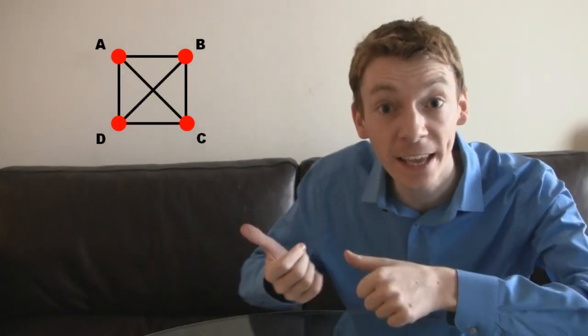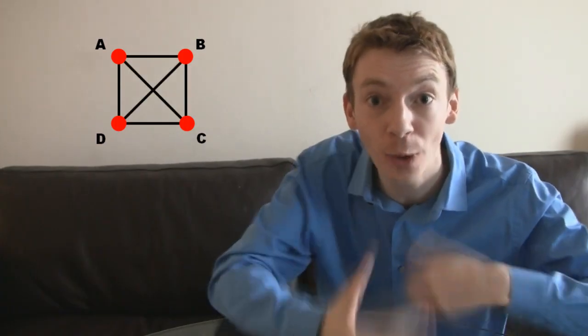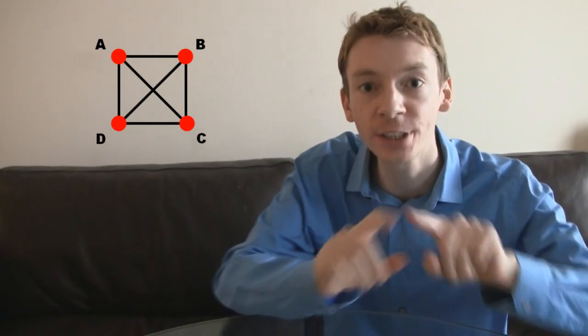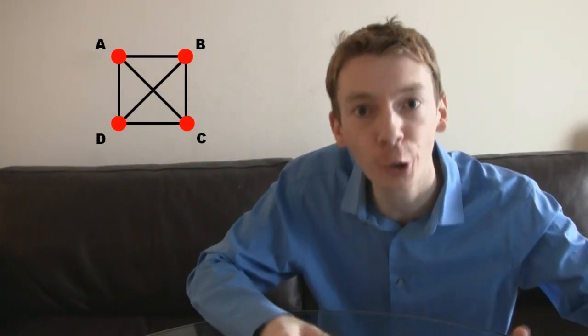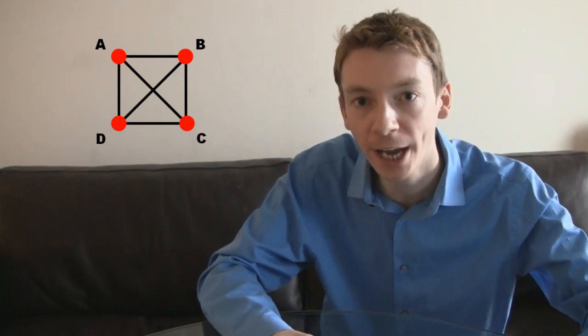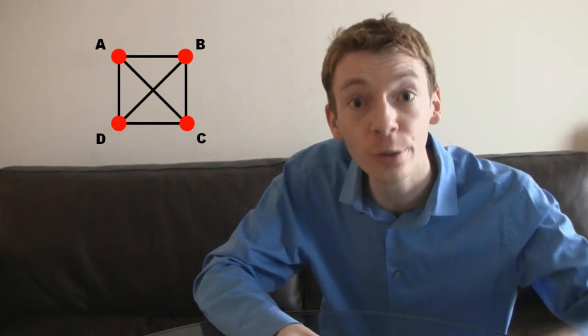So we could connect the towns together like this, so every town is connected to every other town. Now, each side of the square has length 1, and the diagonals, well, with a quick bit of Pythag, you can work out that the diagonals are root 2, the square root of 2.